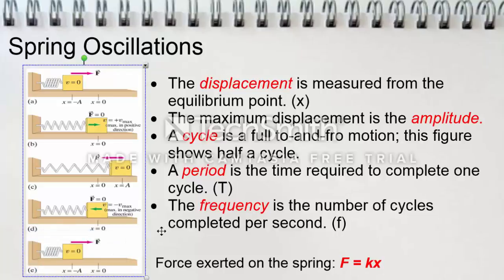This diagram shows that the energy changes from potential energy to kinetic energy and back again as the spring oscillates. In this figure, the force is being exerted on the spring. This gives us the equation: force equals the positive value of the spring constant multiplied by the displacement.